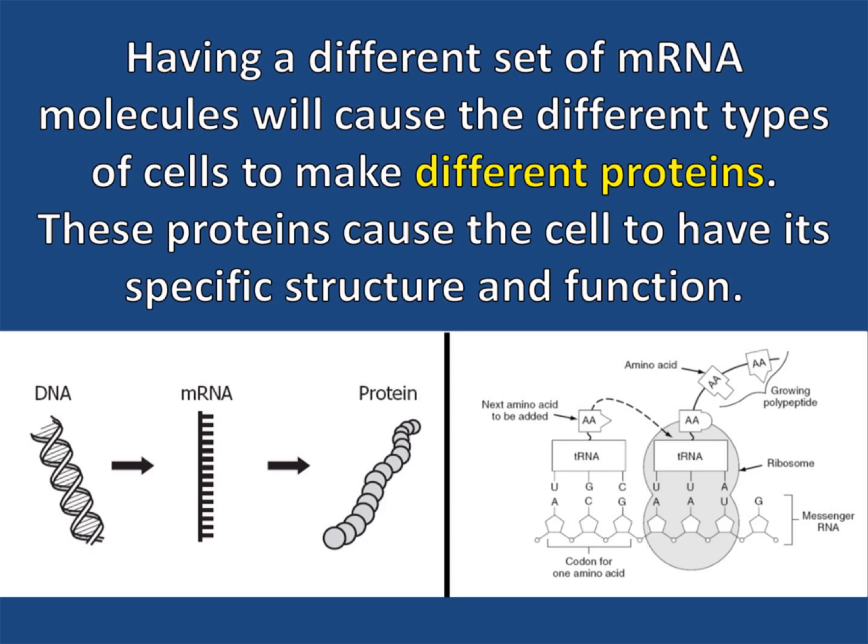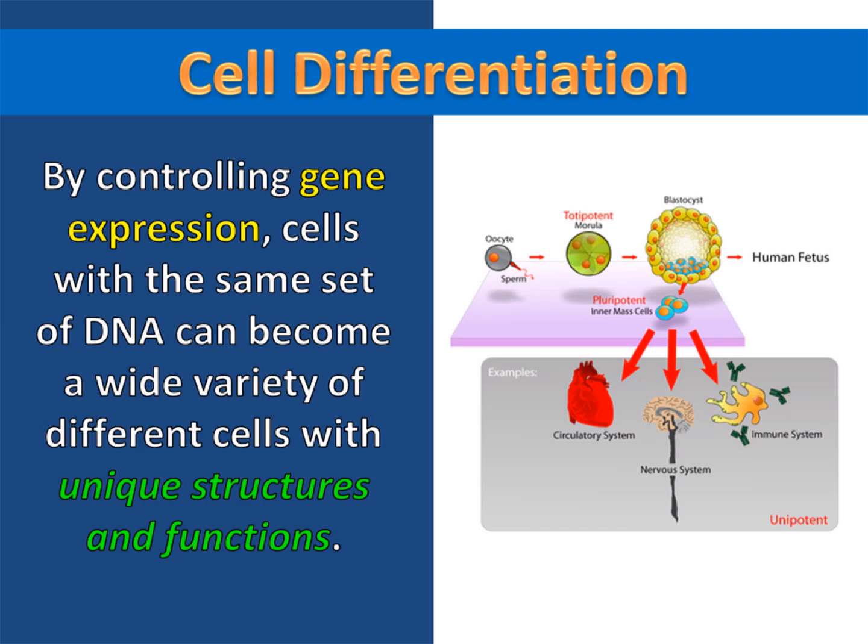Having a different set of mRNA molecules will cause the different types of cells to make different proteins. These proteins cause the cell to have its specific structure and function. By controlling gene expression, cells with the same set of DNA can become a wide variety of different cells with unique structures and functions.